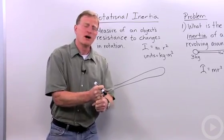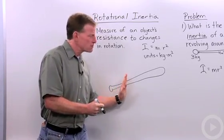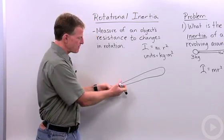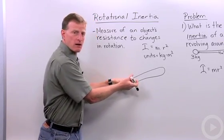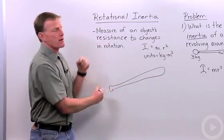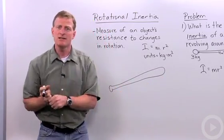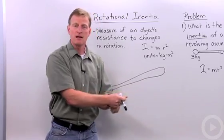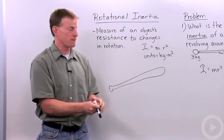Well, you can apply that same force by choking up on the bat. So instead of grabbing it down here, you're going to grab it up here. What you're doing is decreasing the radius of that rotation, and that's going to make it easier to get that bat up to speed and get a good hit and get on base.